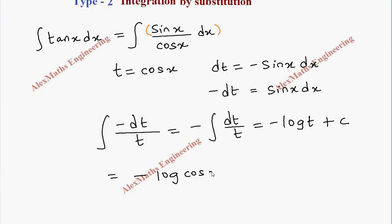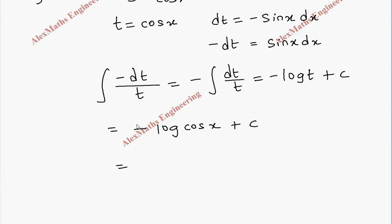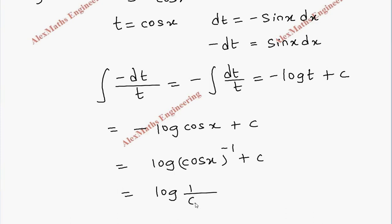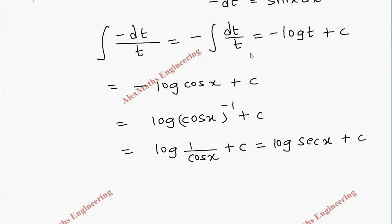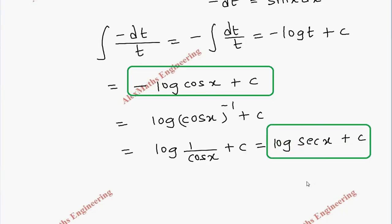Replacing t with cos x gives minus log cos x plus c. This minus 1 can be taken to the power, so this becomes log of cos x to the power minus 1, which is 1 by cos x. Since 1 by cos x is sec x, this equals log sec x plus c. So the formula for integration of tan x is either minus log|cos x| plus c, or log|sec x| plus c.